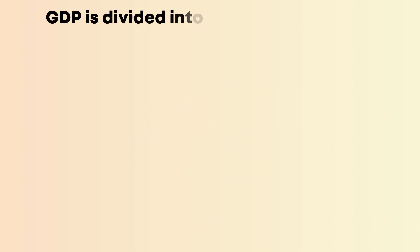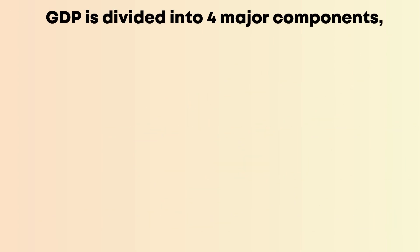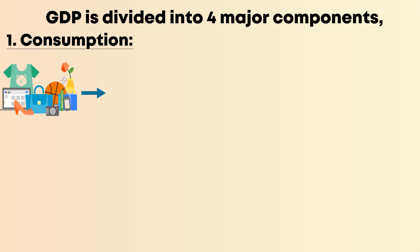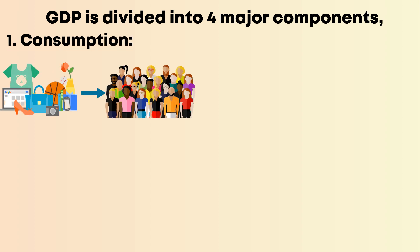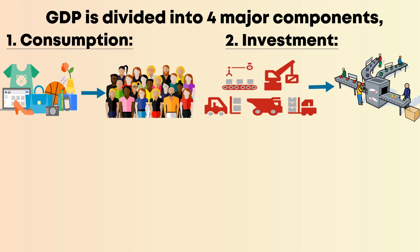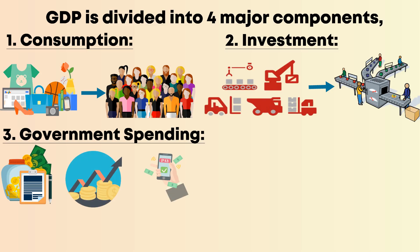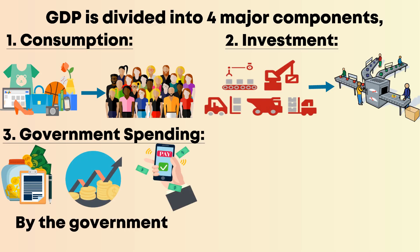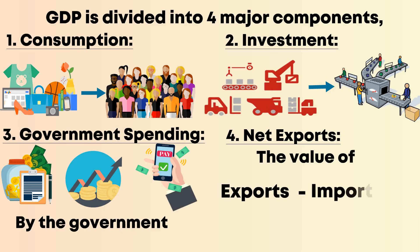GDP is divided into four major components. Number one: consumption — the total value of goods and services consumed by a country's households. Two: investment — spending on capital goods that will be used for future production. Three: government spending — all consumption, investment, and payments made by the government for current use; public expenditures on goods and services. And number four: net exports — the value of exports minus imports.